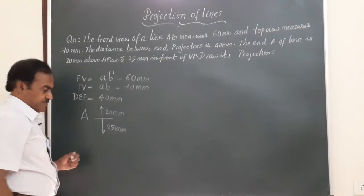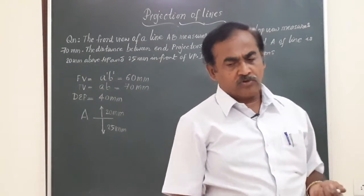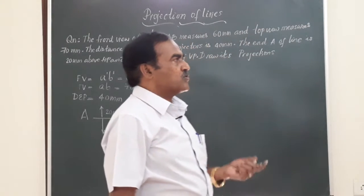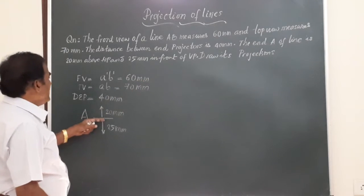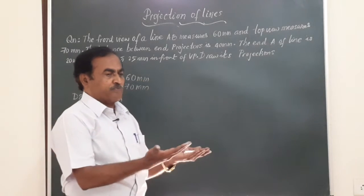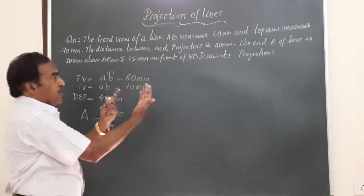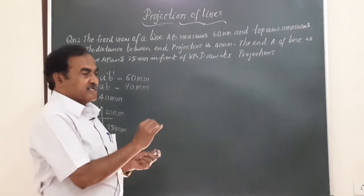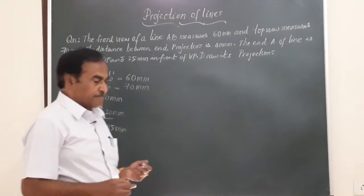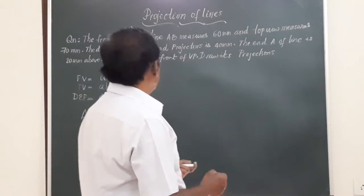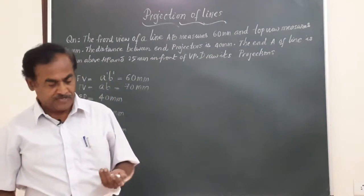Friends, this is a very important concept. Generally, almost across the globe, first angle projection is being used. So when it comes to the end points of the line, it is 20 mm above HP. Any distance above HP is taken above the XY reference line. Any distance from the VP is taken below the XY line. So this is the data given to us, and using this data we should be able to obtain the true length of the line, the angle made by the line with HP and VP, etc.